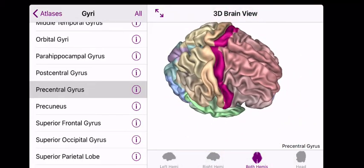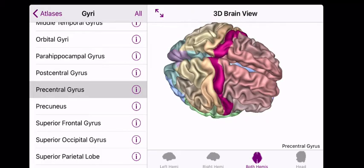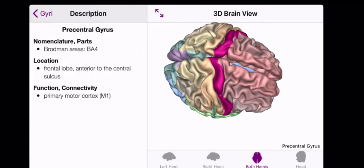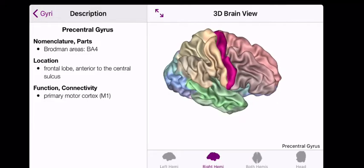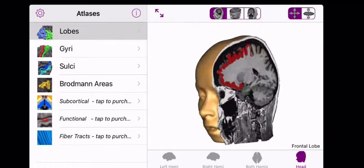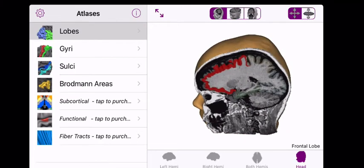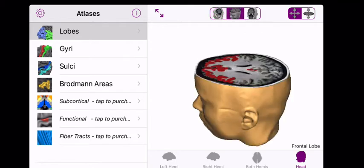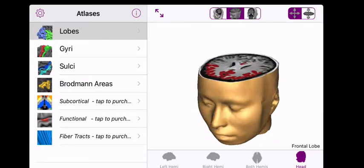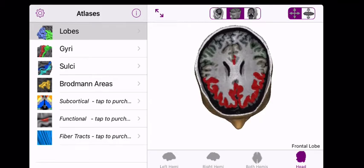Here we can see that pre-central gyrus. It's going to give you a little bit more information on each brain structure, which is something I really love. But it is limited in terms of the categories here—just lobes, gyri, sulci, Brodmann areas. You've got to pay for a little bit more.